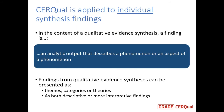So what do we mean by a finding? In the context of a qualitative evidence synthesis, a finding is an analytic output that describes a phenomenon or an aspect of a phenomenon. In a typical qualitative evidence synthesis, findings may be presented as themes, categories, or sometimes theories. A finding can be quite descriptive in nature — for example, describing what different stakeholder groups think about communication around childhood vaccination — or it may be more interpretive, presenting a theory about why people do or don't adhere to chronic medication.